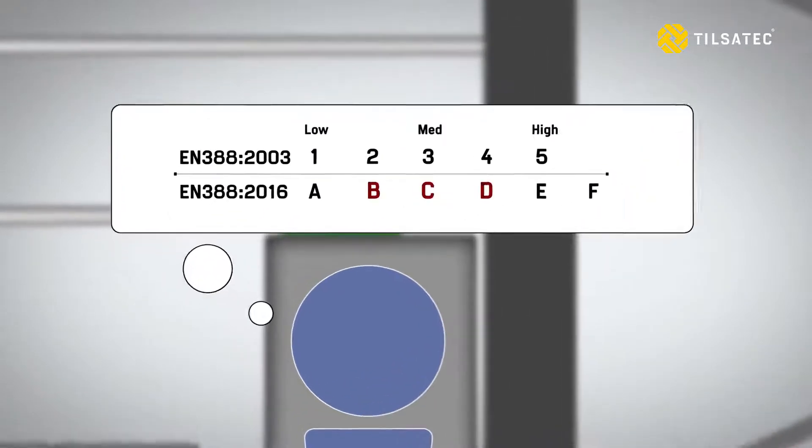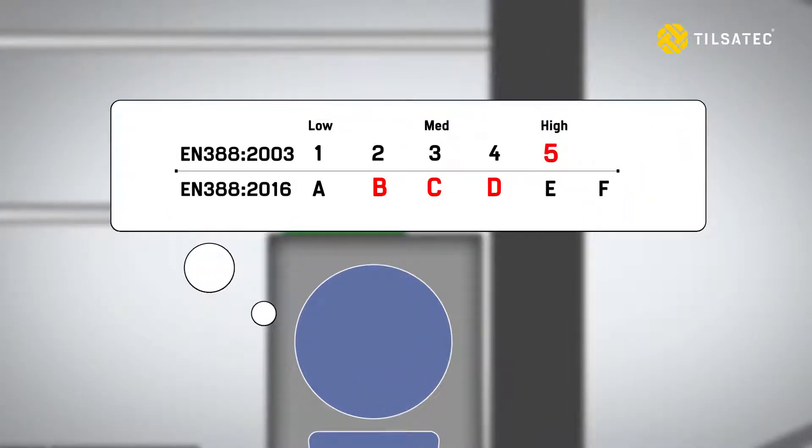Remembering where we plotted B and C in relation to level 5 a moment ago, that may be a bit of a surprise. So if you're currently specifying minimum level 5 cut resistance, now is a good time to assess your current hand protection and ask suppliers for test results to ISO 13997.